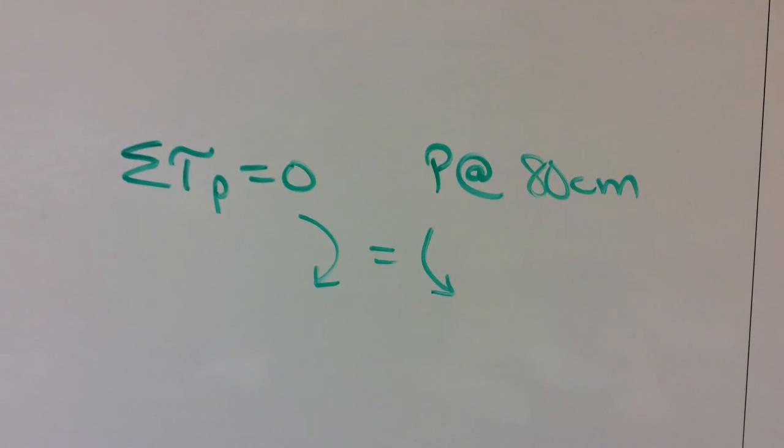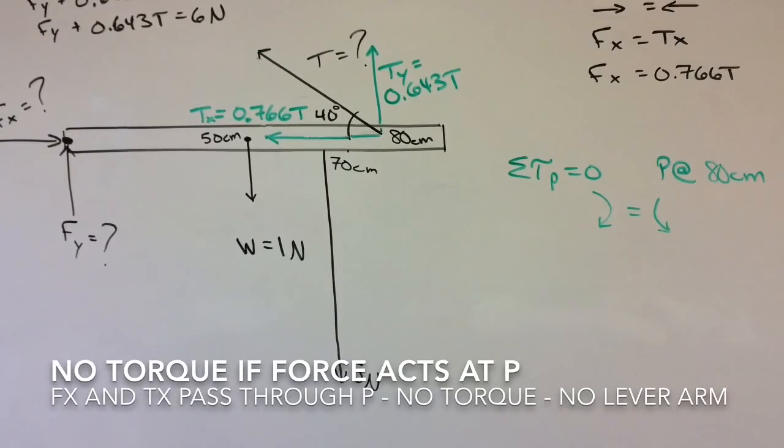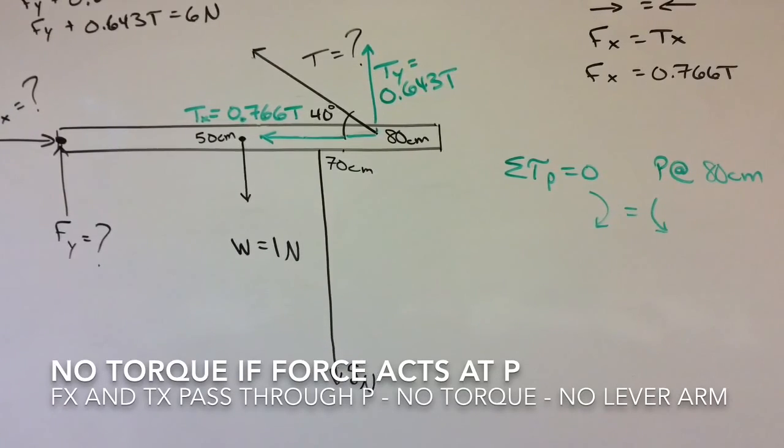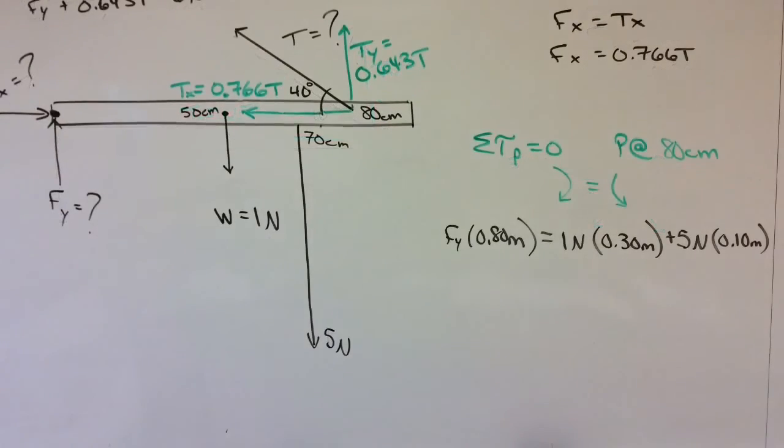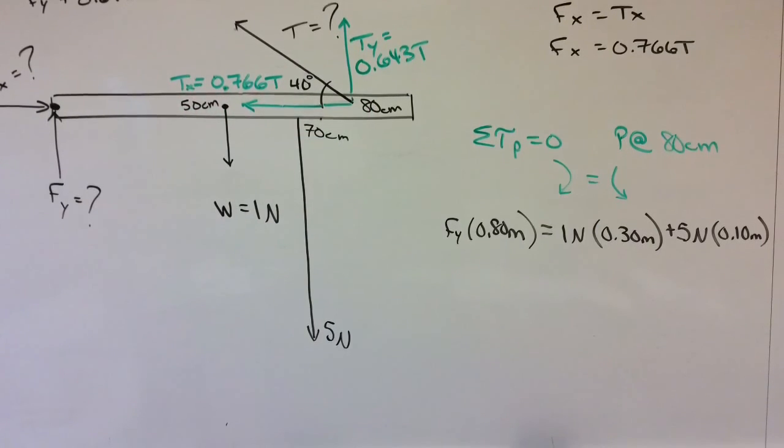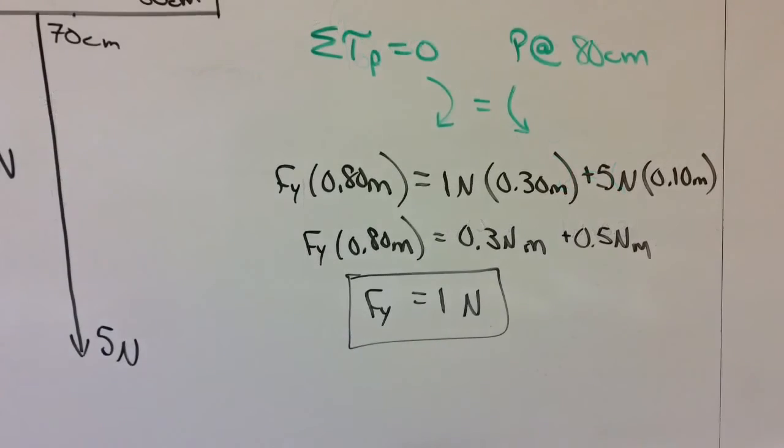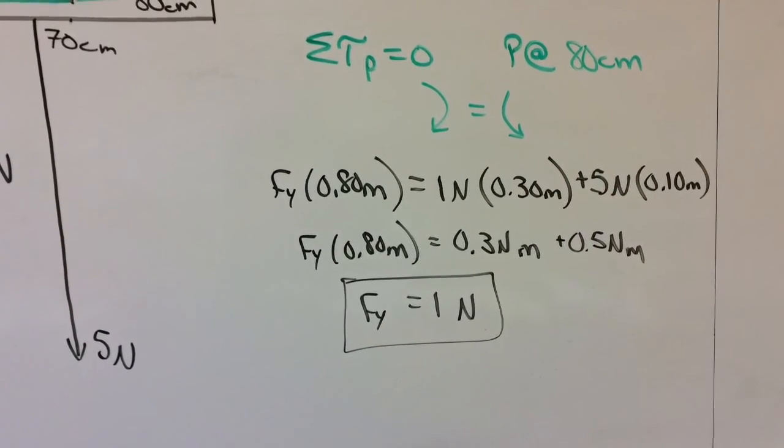Remembering the torque is lever arm times force and the two must be perpendicular, I'm going to fill out the equation. The clockwise torques on one side, there's one of them: Fy times its lever arm, 0.8 meters. And the two counterclockwise torques: 1 newton at 3 tenths of a meter and 5 newtons at 1 tenth of a meter.